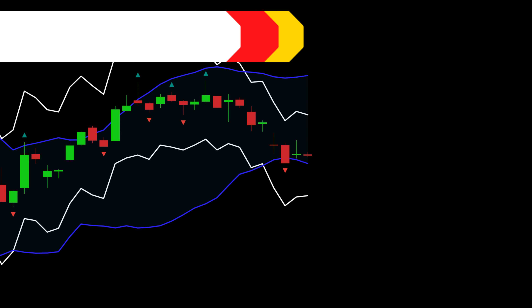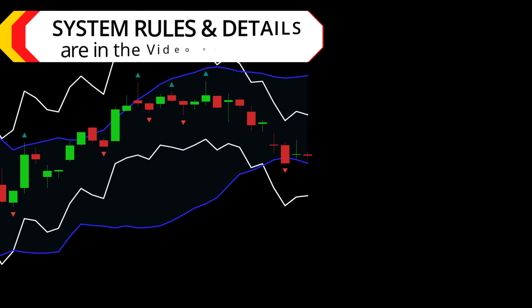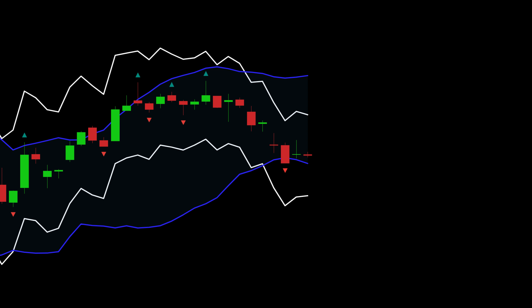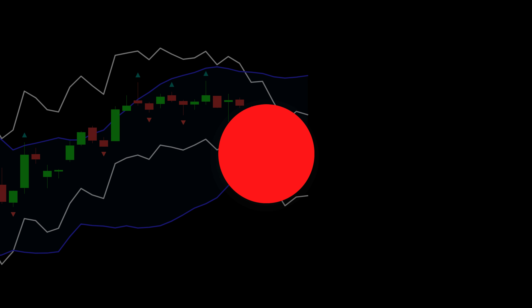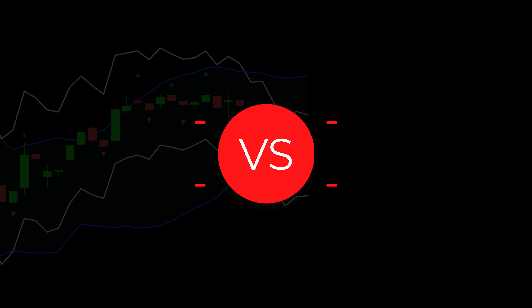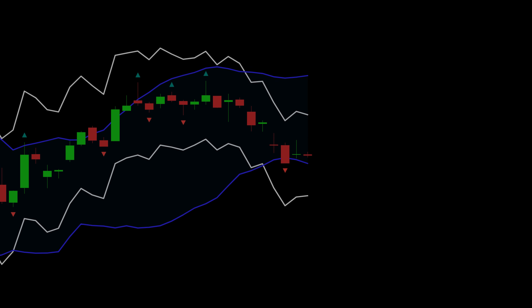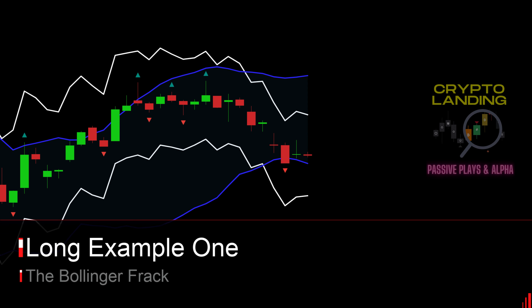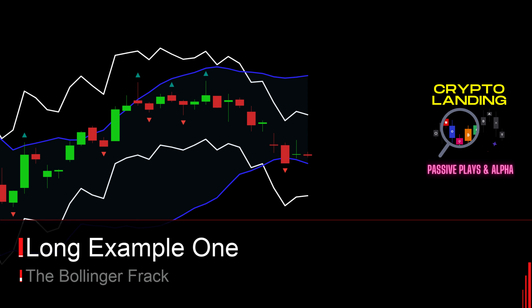Let's go over entry criteria and review some examples. As always, system rules and details are listed in the description below. This chart is Roku, which is traded on the NASDAQ, 15-minute Japanese candlesticks. The rules to enter long on the Bollinger Frack are as follows.